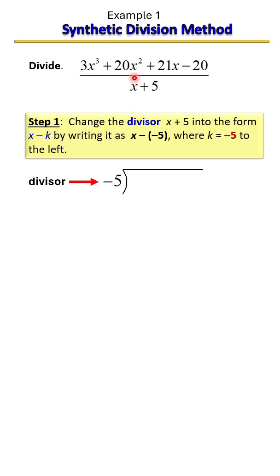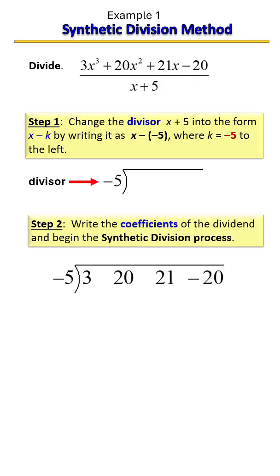just use the coefficients. With synthetic division we don't use any variables, so you just take the coefficients here: 3, 20, 21, and negative 20. Then you're going to place that underneath your division symbol, and then you're ready to start the process by bringing down the first term.